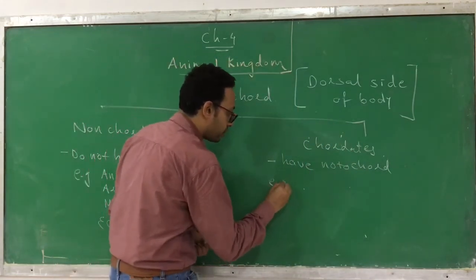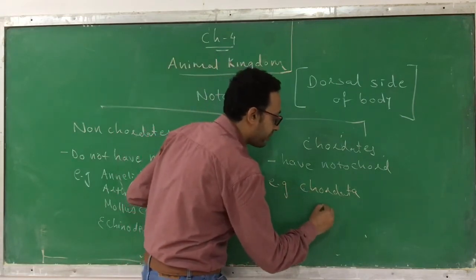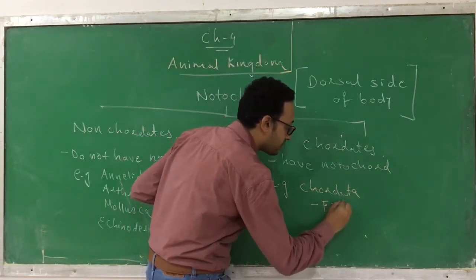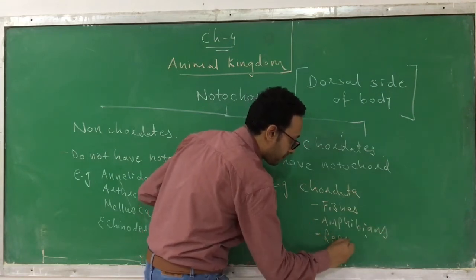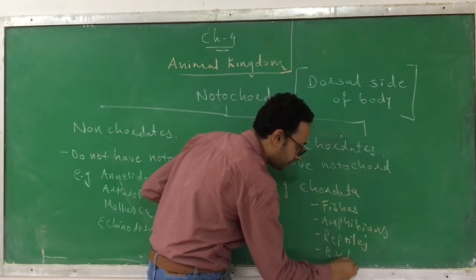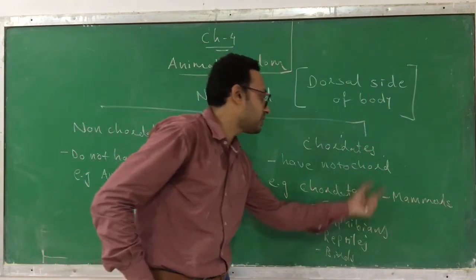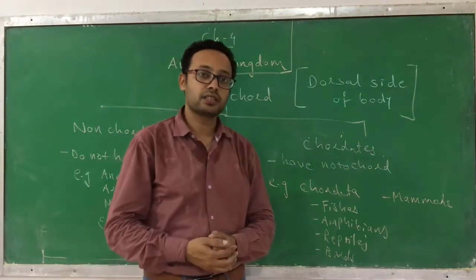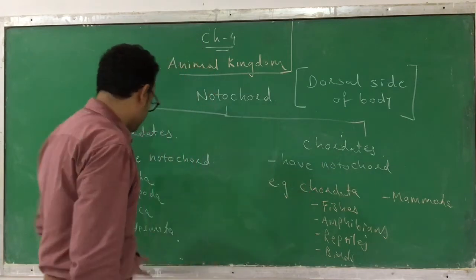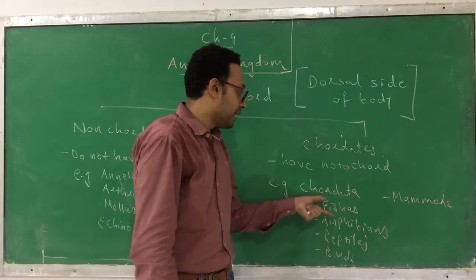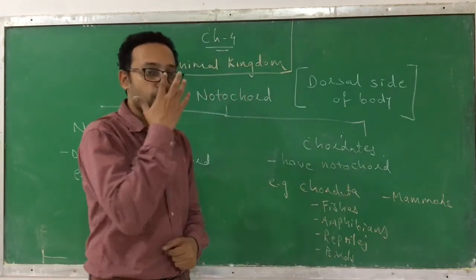Those who have a notochord are called chordates, and the example is the phylum Chordata. Chordata includes many different classes — like fishes, amphibians, reptiles, birds, and mammals; we fall under mammals. Cordata is a phylum and these are all its classes. Remember the classification hierarchy: species, genus, family, order, class, phylum. Porifera, Annelida, Arthropoda, Mollusca, Echinodermata, and Chordata are all phyla. Within Chordata, fishes, amphibians, and reptiles are the classes — they all have a notochord, so they fall under Chordata.